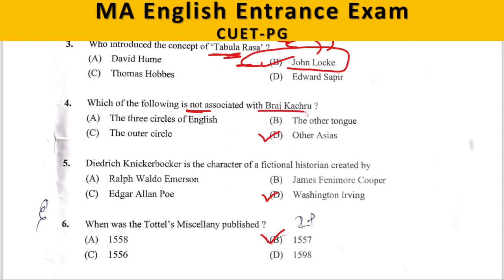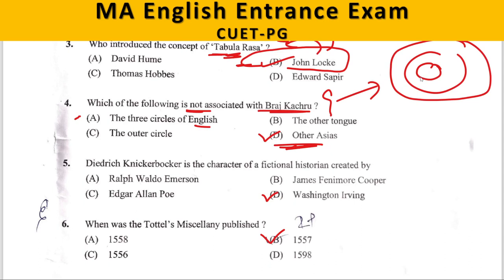Next question: Which of the following is NOT associated with Braj Kachru? Before answering, you should know what Braj Kachru is famous for. The options are: A. The three circles of English, B. The other tongue, C. The outer circle, D. Other Asias. The correct answer is D — Other Asias. The three circles, the other tongue, and the outer circle are all associated with Kachru. His concept of the circles refers to inner circle — main English-speaking countries like England and America; outer circle — countries like India where English is a second language; and the expanding circle — where English is being taught as a foreign language, such as China and Japan.